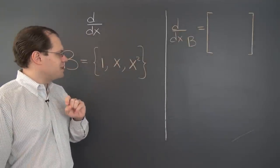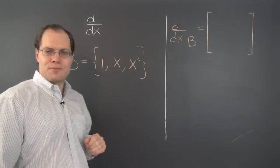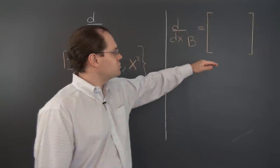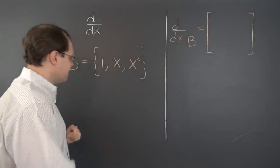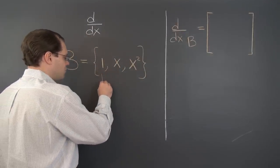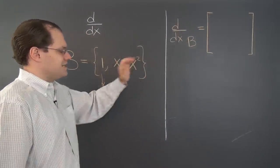So once again we'll choose this simple basis, and it's good for our purposes. Let's construct the matrix that represents the derivative with respect to this basis. Again, a column at a time. Perform the transformation on each of the elements of the basis.